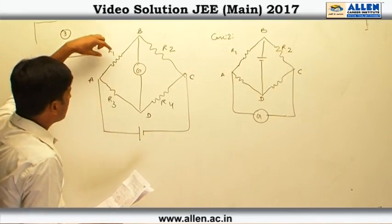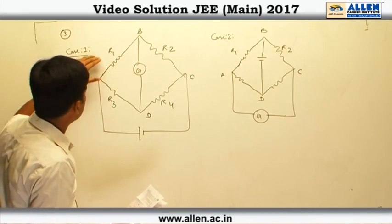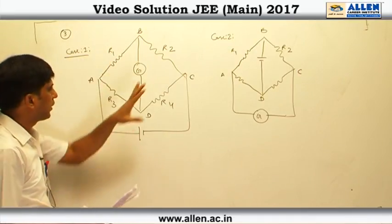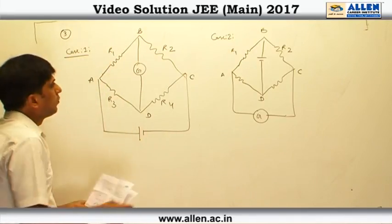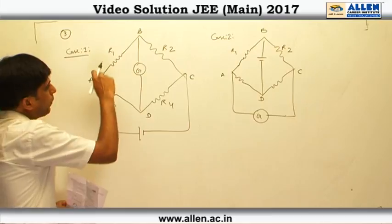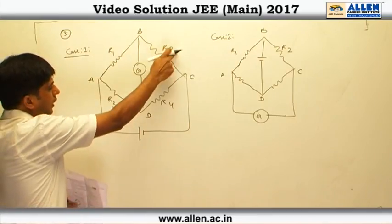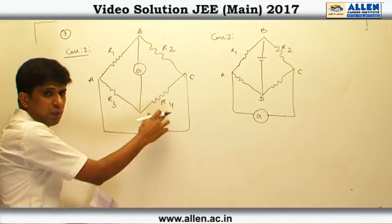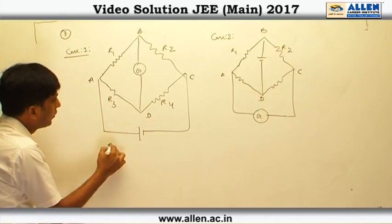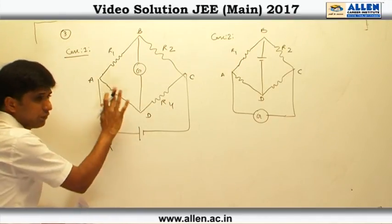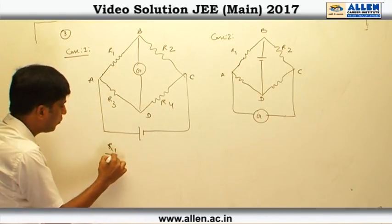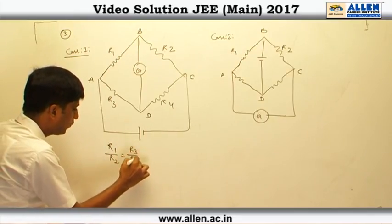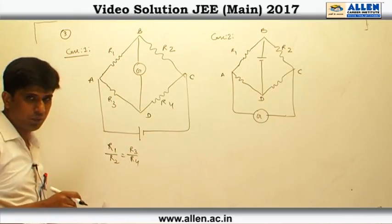The condition of a balanced Wheatstone bridge according to this diagram is that the ratio of R1 and R2 should be equal to the ratio of R3 and R4. That means, to balance this Wheatstone bridge, R1 by R2 must equal R3 by R4 to get zero current in the galvanometer.